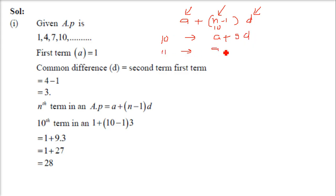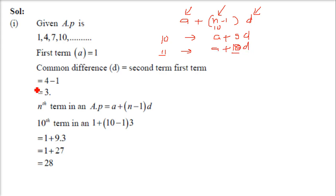Similarly, if you want to find the 11th term it will be A plus 10D. This exponent is always 1 less than the term number. Just use the formula A plus N minus 1 into D. So to find the 10th term we use A plus 9D.